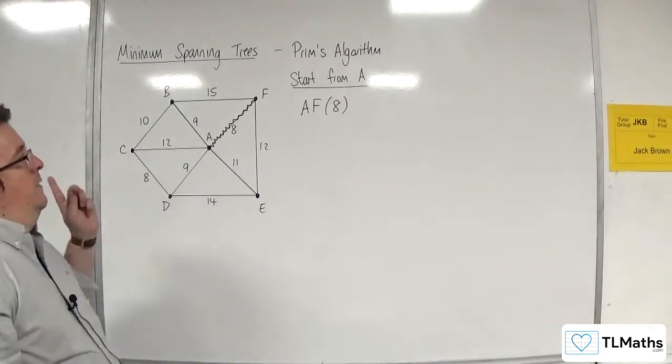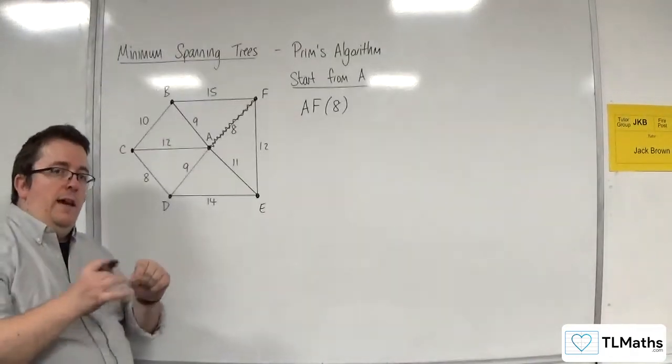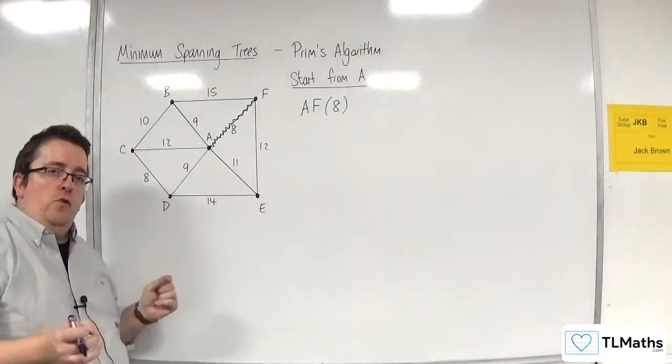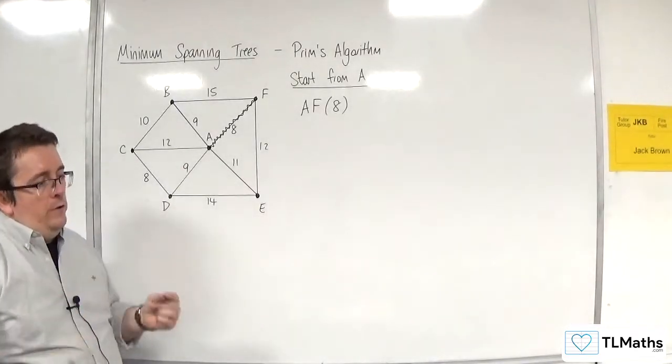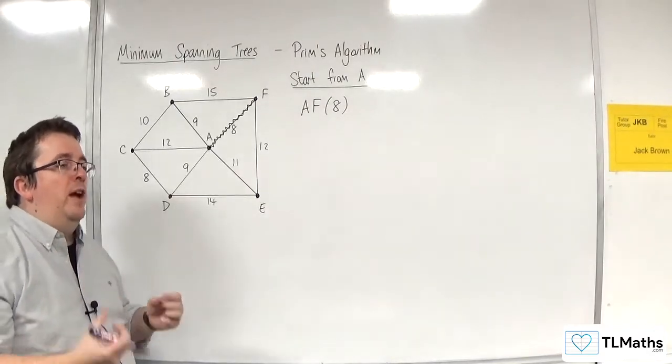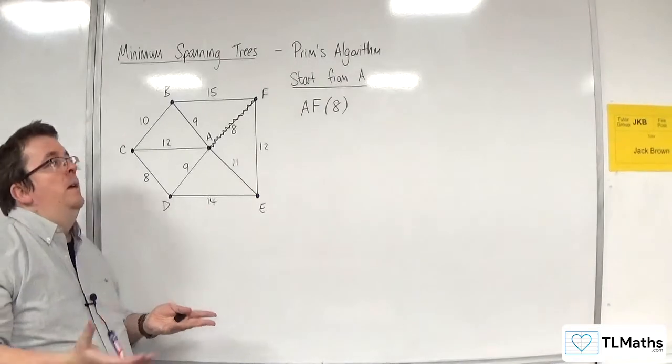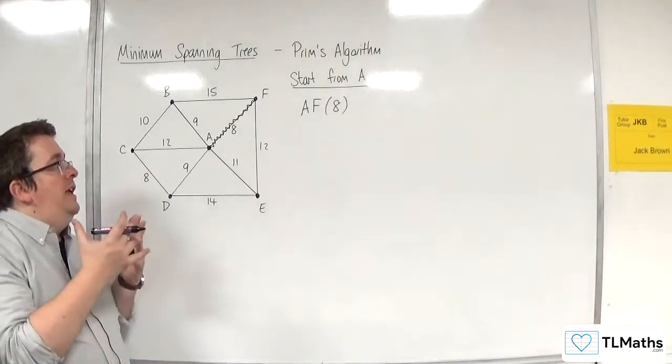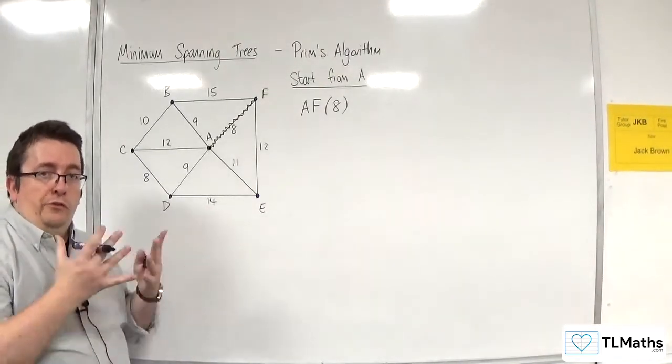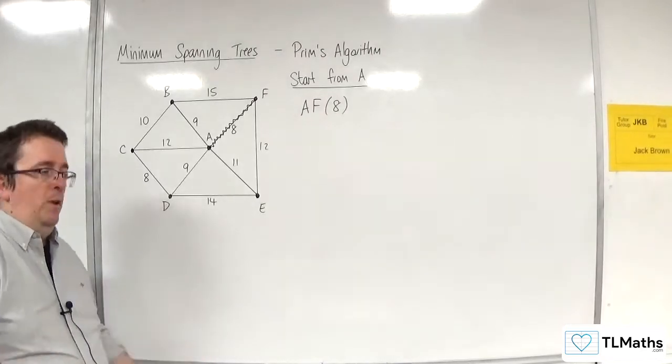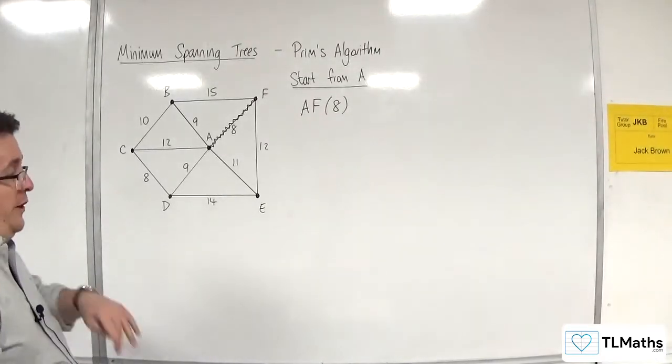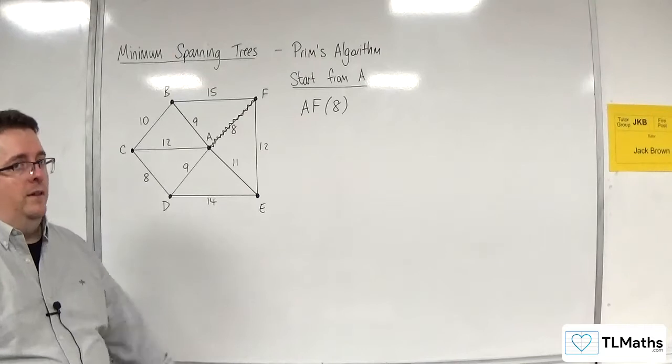Now that you have joined A and F to your tree, what you are now going to do is you're going to look at all of the edges coming out of both A and F. And you are going to select the shortest one or the one with least weight, that doesn't create a cycle, of course.